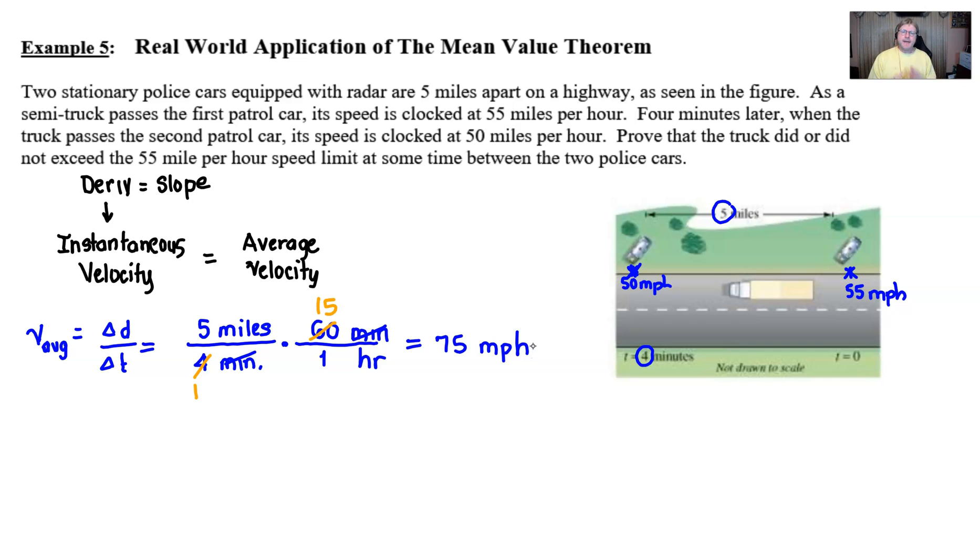So we have mathematical proof that this truck was averaging 75 miles per hour. What that means is the instantaneous rate of change had to also equal 75 miles per hour at least once. And I have a pretty strong suspicion that this truck was probably going 75 miles an hour at least twice. The reason I say that is if you think from the graphical standpoint here, the truck would have had to have sped up from 55 miles an hour to something probably more than 75 in order to maintain an average of 75. And then at some point, the truck would have slowed down to get to 50 miles an hour.